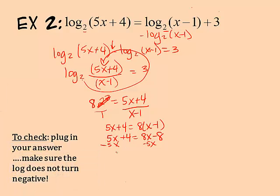When I subtract, I get four equals three x minus eight. If I add eight to both sides, I get twelve equals three x. Divide by three, x equals four.